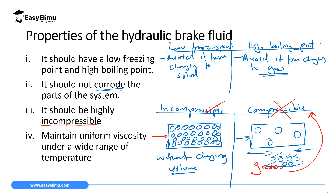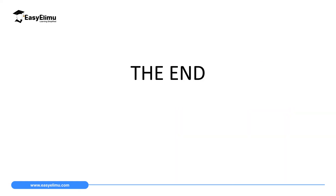The last property is that the liquid must maintain uniform viscosity over a wide range of temperatures. Viscosity is the resistance — like friction — in fluids. The liquid we use must have uniform viscosity so that an increase in temperature does not increase resistance to fluid motion, and a decrease in temperature does not change the resistance either. So that is the end of our lesson today. In the next lesson we will discuss atmospheric pressure.